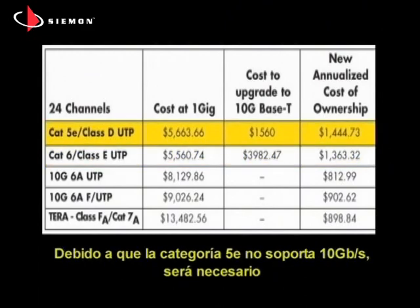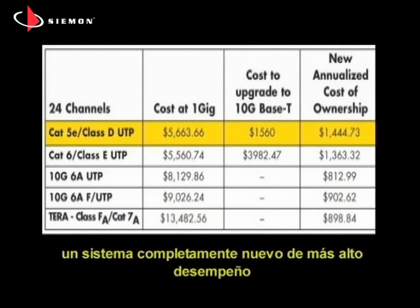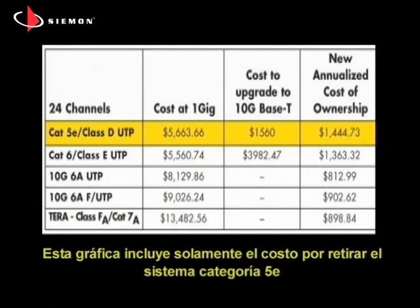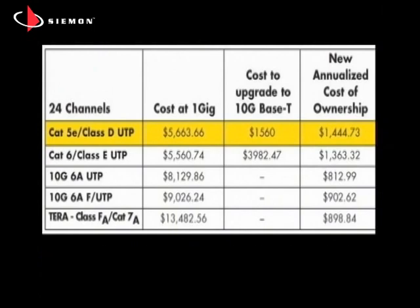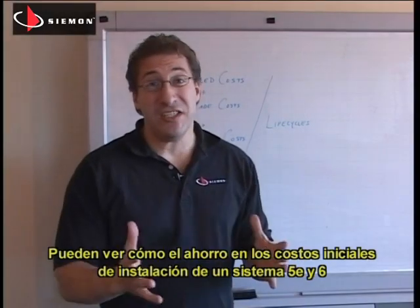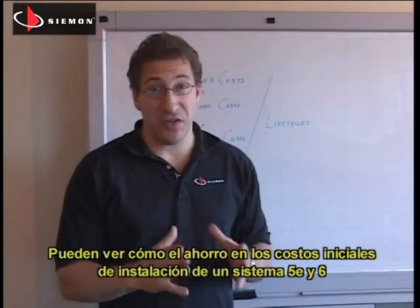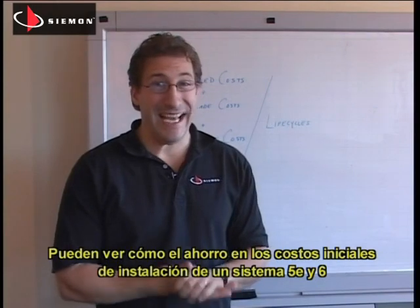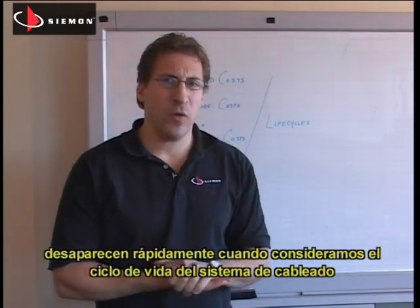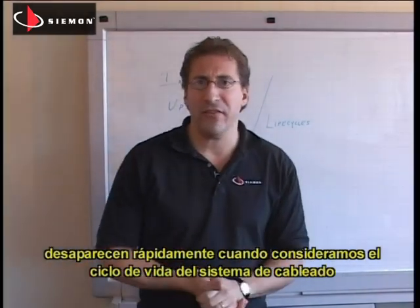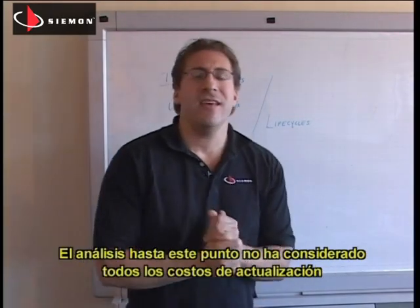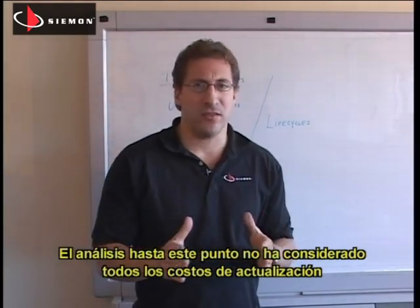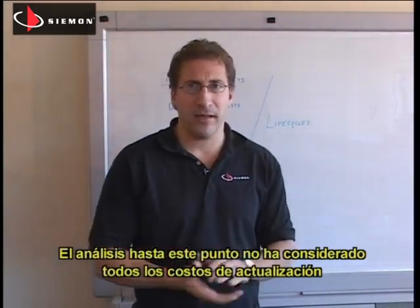Since Category 5E cannot support 10G, it requires complete removal and replacement with a higher performing system. This graph includes only the cost of removing the Category 5E system. So we can see that the initial installed cost savings of putting in a Category 5E or 6 system quickly disappears when we consider the life cycle of the cabling system, and this analysis hardly addresses all of the upgrade costs at this point in time.